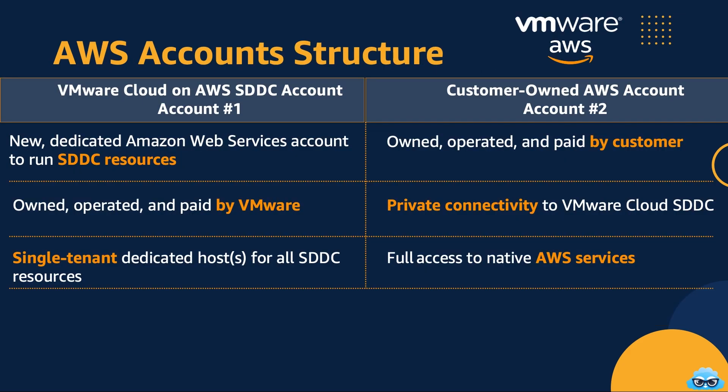Let's take a closer look at the two AWS accounts within VMware Cloud on AWS and their respective roles. AWS account number one is operated by VMware. This account is owned, operated and paid for by VMware. It serves as the hosting ground for the VMware SDDC stack, seamlessly integrating your on-premises environment with AWS resources. The focus is on providing the VMware infrastructure and services.